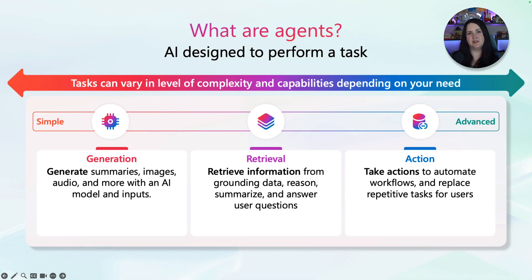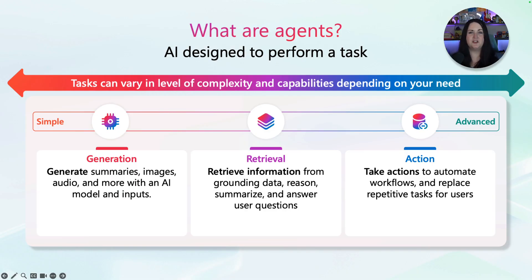So what do we mean when we say agent? Well, at a high level, an agent is simply an AI designed to perform a task. But not all agents are created equal. Some are very simple — maybe they just generate a summary, an image, or a short answer. Others may be more advanced, giving the ability to retrieve information from your data, reason over that, and provide detailed responses. And then you have action-focused agents. These don't just give you answers, but they actually do things like automating workflows and replacing repetitive tasks.